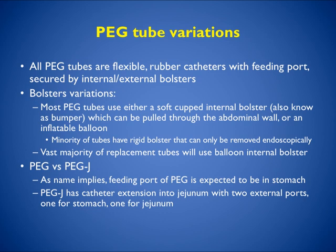All PEG tubes are flexible rubber catheters with a feeding port secured by internal and external bolsters. Most PEG tubes have either a soft-cupped internal bolster, which can be pulled through the abdominal wall, or an inflatable balloon. A minority of tubes have a rigid bolster that can only be removed endoscopically. The vast majority of replacement tubes use a balloon internal bolster. The feeding port of a PEG is expected to be in the stomach, while a PEG-J tube has a catheter extension into the jejunum with two external ports — one for the stomach and one for the jejunum.